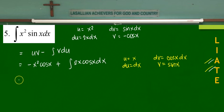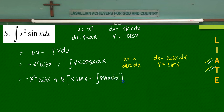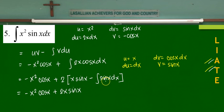Combining everything: negative x²·cos(x) plus 2x·sin(x), and the integral of 2·sin(x) dx is negative 2·cos(x), but since there's a negative sign it becomes plus 2·cos(x). The complete final answer is negative x²·cos(x) plus 2x·sin(x) plus 2·cos(x) plus C.